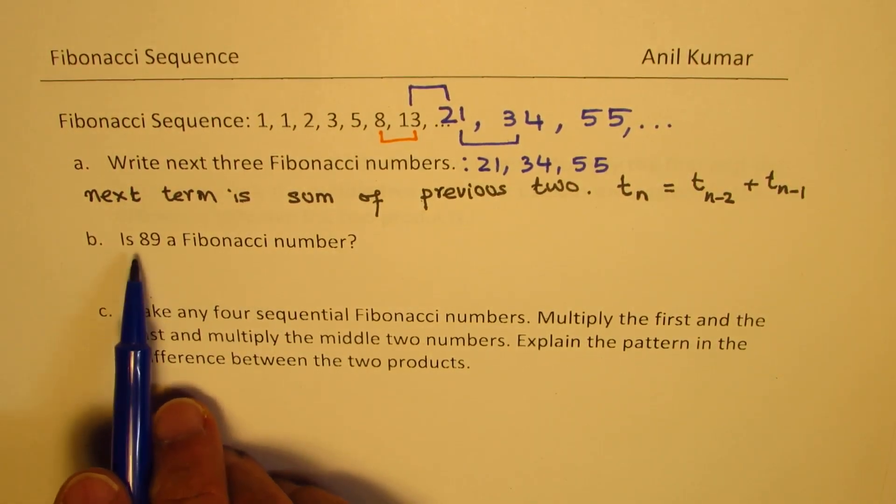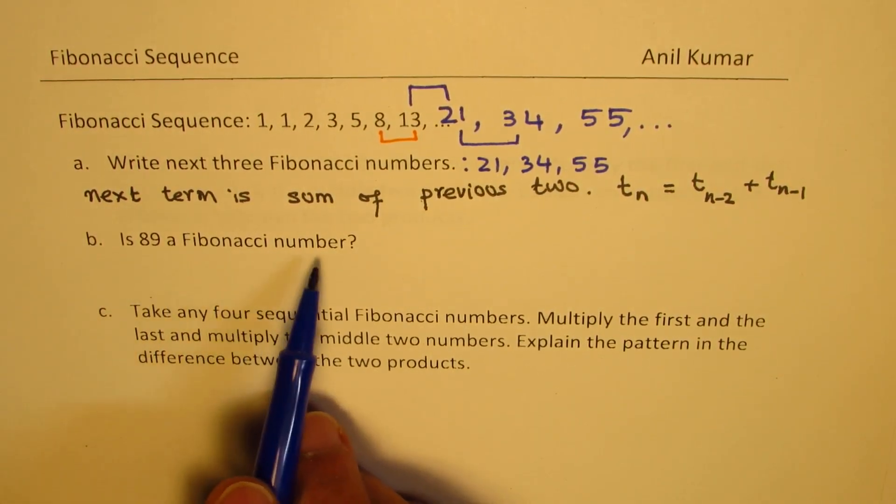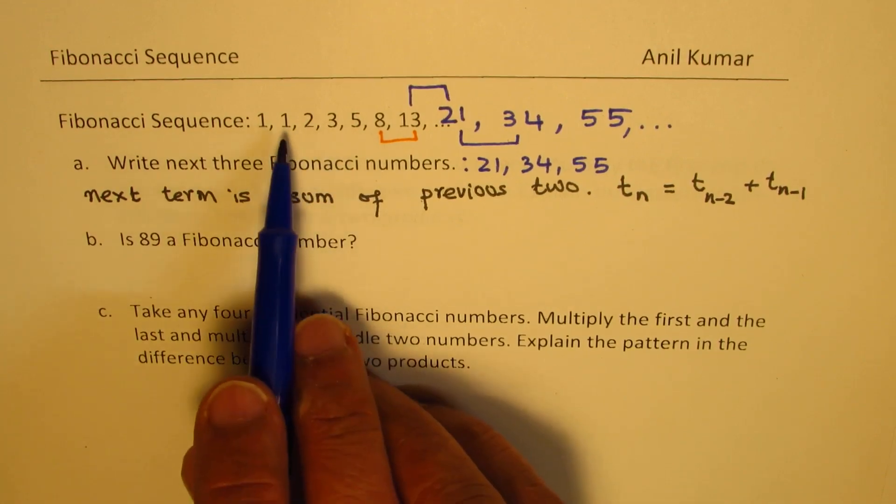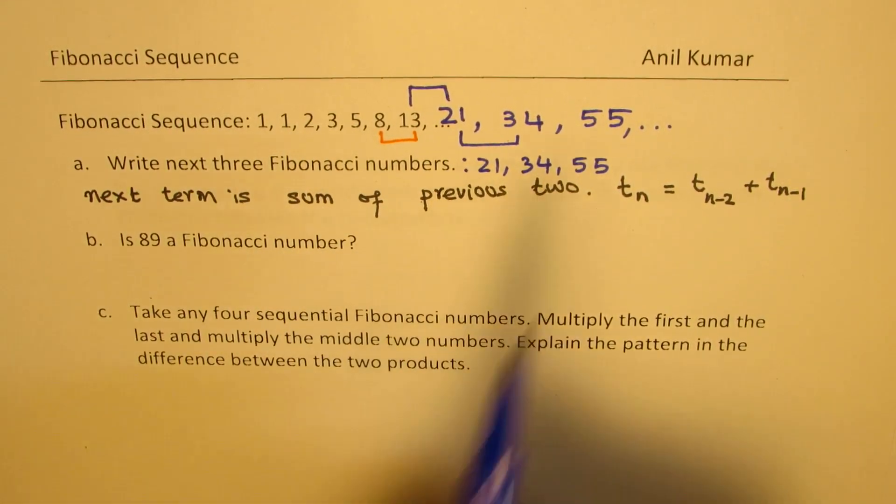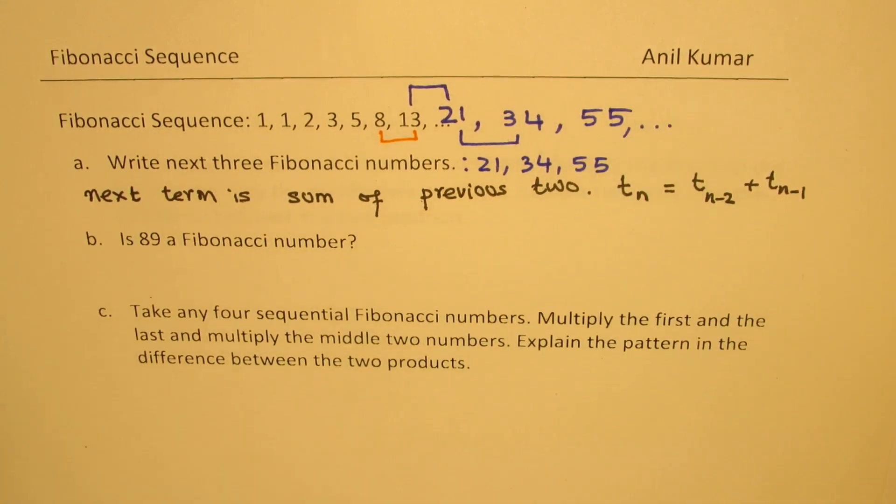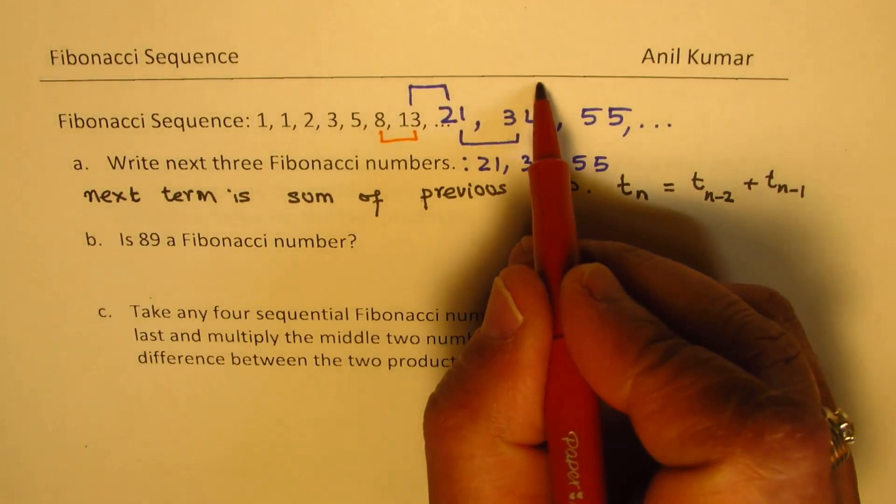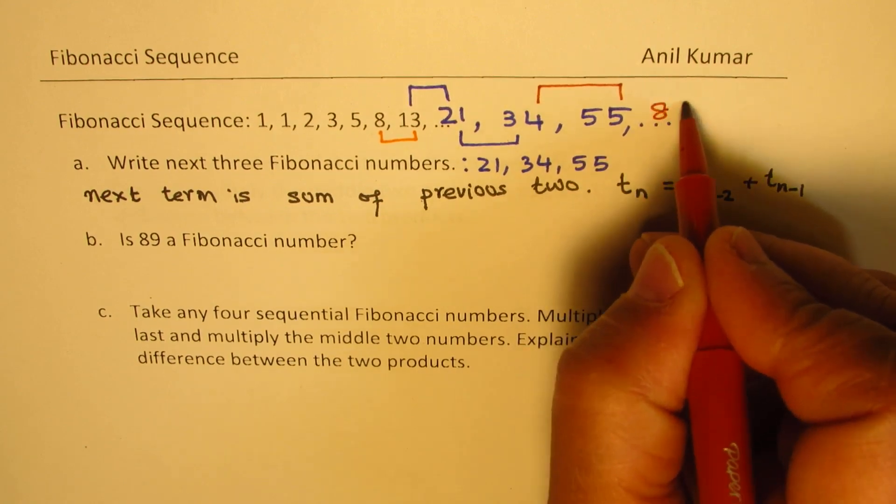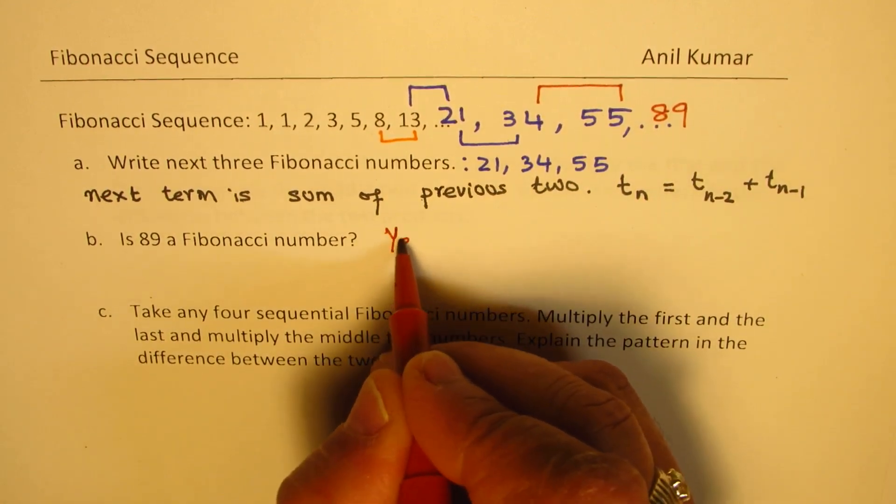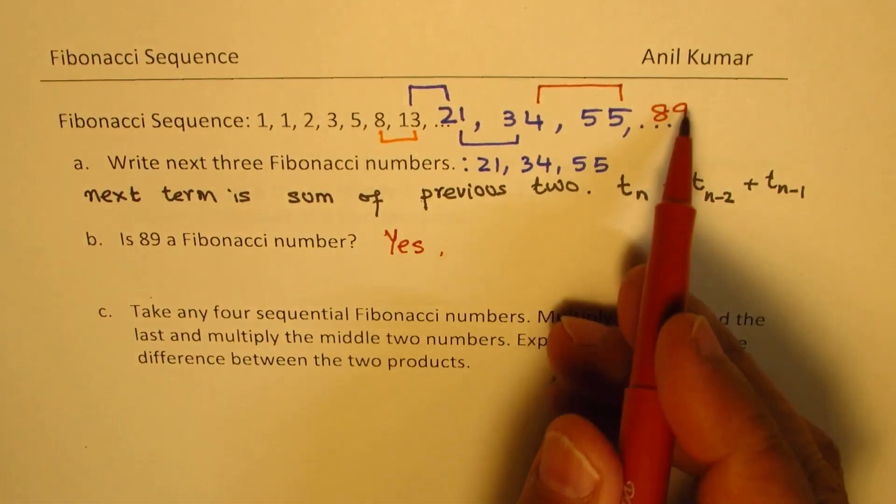Now, part B: is 89 a Fibonacci number? All the numbers which come in this sequence are called Fibonacci numbers. Let's continue this pattern to get the next number and see if 89 is part of it. If I add these two, we do get 89, and the answer is yes.